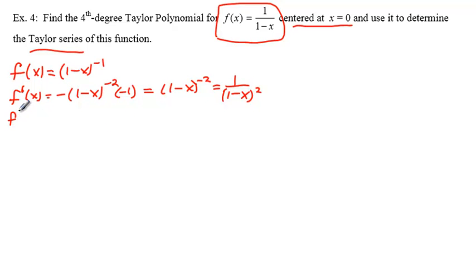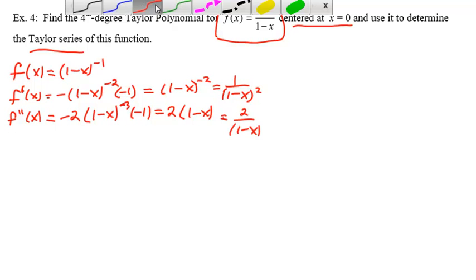Let's go ahead and get f double prime of x. That will be equal to negative 2 times 1 minus x to the negative 3rd power times negative 1. The negatives cancel, but the 2 is still there. So it will be 2 times 1 minus x to the negative 3rd power, and this ends up being the 3rd power down here.